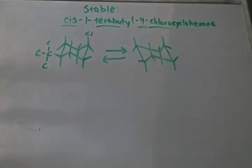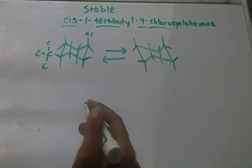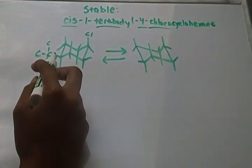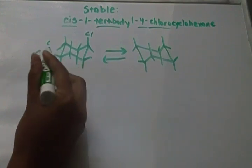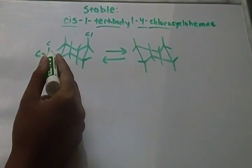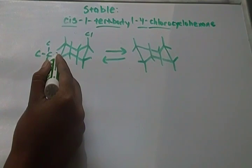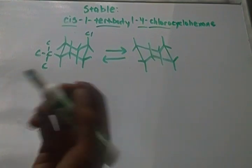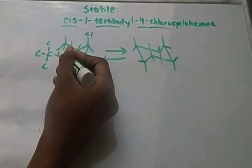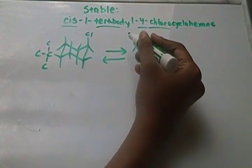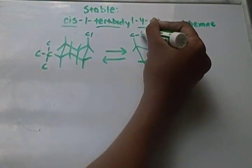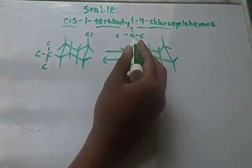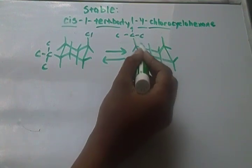Now it's time for the ring flip. When you do a ring flip, all you do is take the substituent, keep it in the same direction it was going, but move it over to the next carbon. So this tert-butyl — I'm going to keep it up. It was equatorial up, but I have to keep it up. I'm going to move it to the next carbon while keeping it up, so I put it at this position right here. That's my tert-butyl — it's still going up, axial up. I just moved it over to the next one.